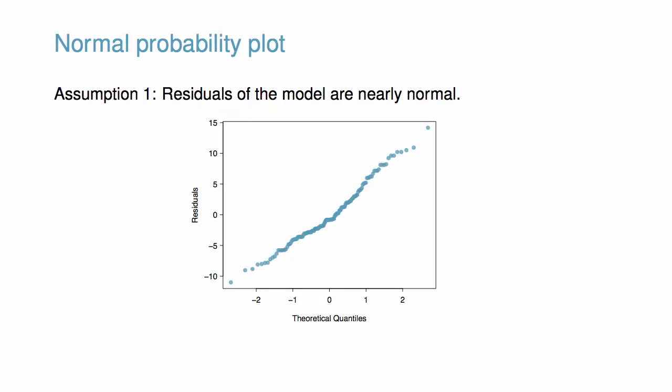We can evaluate the first assumption—that residuals are nearly normal—within the Mario Kart example using a normal probability plot of the residuals. While the plot exhibits some minor irregularities from a straight line, there are no outliers that might be cause for concern.